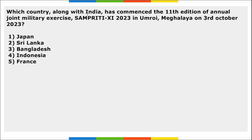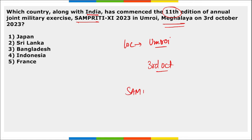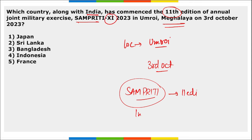First question: which country, along with India, commenced the 11th edition of Exercise Samprithi? This exercise was held in Umroi, Meghalaya, on 3rd October. It was between India and Bangladesh. Samprithi is a joint exercise held in Umroi, Meghalaya, and this was the 11th edition.